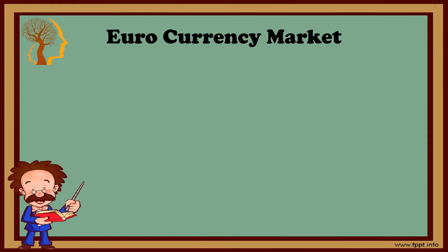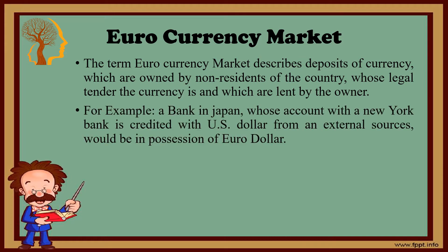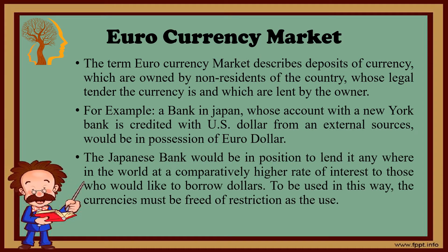Let's discuss the euro currency market. The term euro currency market describes deposits of currencies which are owned by non-residents of the country whose legal tender the currency is, and which are lent by the owner. For example, a bank in Japan whose account with a New York bank is credited with US dollars from an external source would be in possession of euro dollars. The Japanese bank would be in a position to lend it anywhere in the world at a comparatively higher rate of interest to those who would like to borrow dollars.